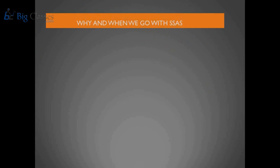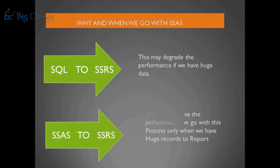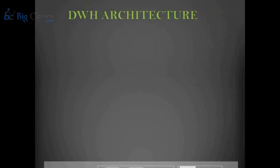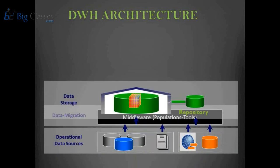When a company needs very high performance, they go directly from SSAS to SSRS rather than SQL to SSRS. Companies implementing SSAS push SQL data into SSAS first, and then SSRS extracts from SSAS. The data warehouse architecture has different operational sources — Excel or other formats — which are migrated to storage such as data warehousing or databases, and reporting is developed on top.